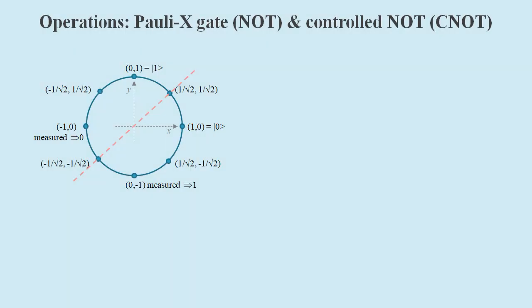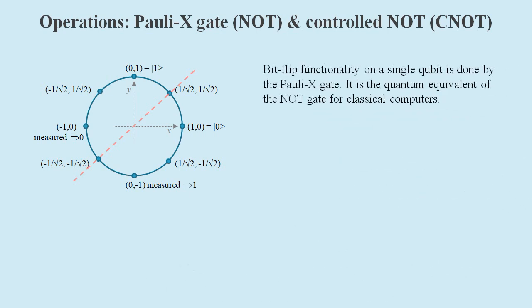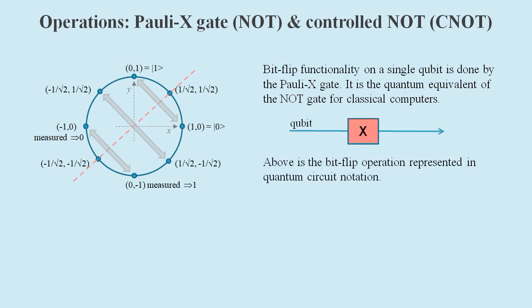Another two gates that we need to know about are the NOT gate and the controlled-NOT gate. The Pauli-X gate is the quantum equivalent of the NOT gate used in classical computing. It effectively flips to the opposite state on our unit circle around a line that's 45 degrees right of vertical, and in quantum circuit notation it is represented by an X in a box.